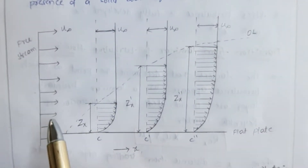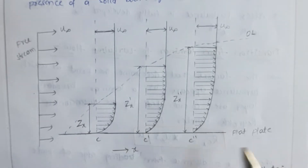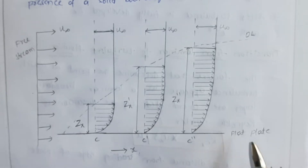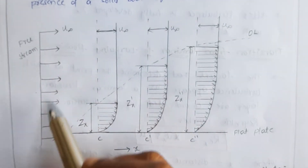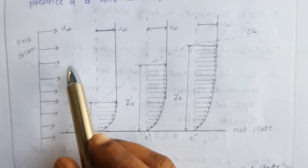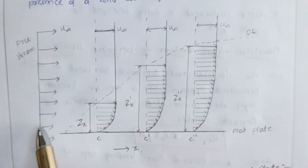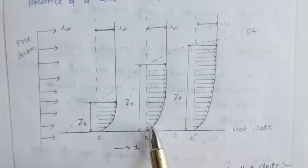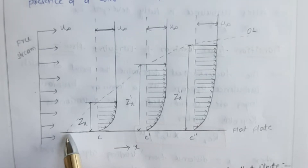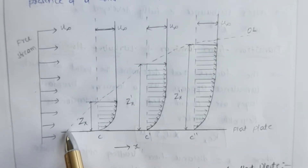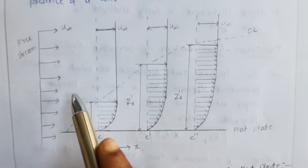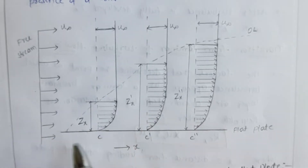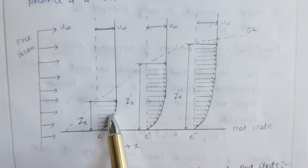Consider a free stream of fluid flowing over a flat plate. The flow of this fluid is parallel to the flat plate surface, and the velocity of the entire free stream is uniform — that is u∞ (u infinity). Once the fluid enters over the flat plate, what happens is: at the solid boundary the velocity is zero, and moving towards the bulk fluid stream the velocity is increasing.